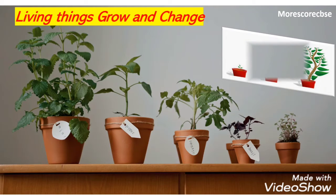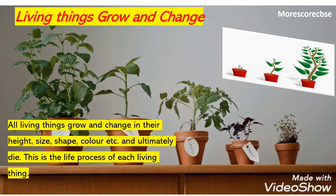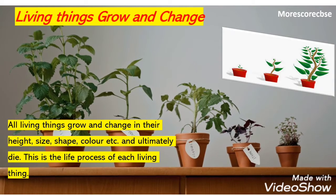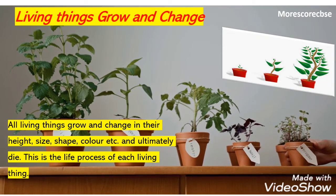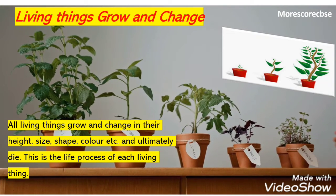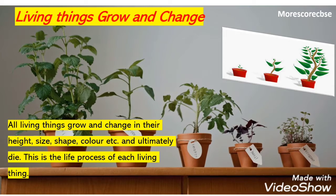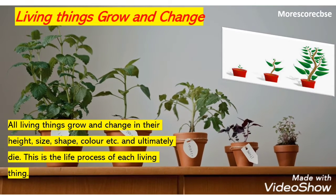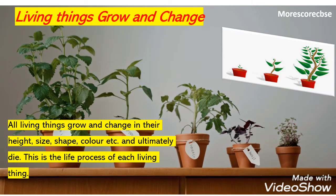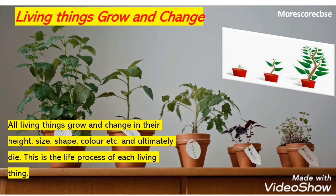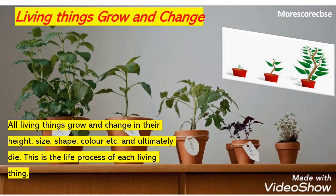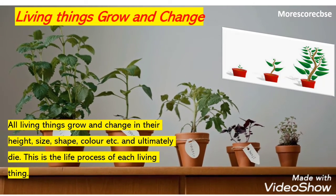The next major characteristic is that living things grow and change. The basic life process of living things is that they grow and change in their size, shape, and color, and finally die. In most plants, seeds first germinate, then become a sapling, then grow into a tree that gives flowers and fruit, and finally dies.